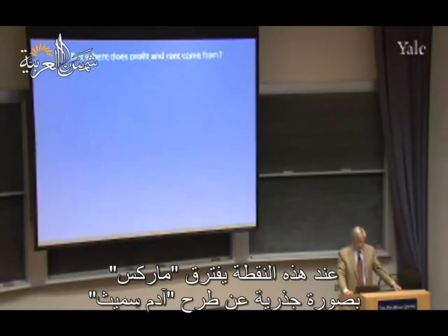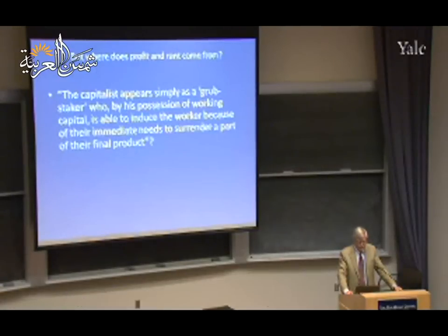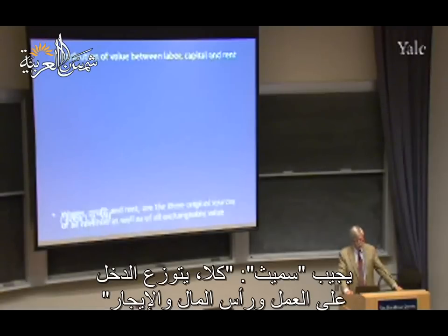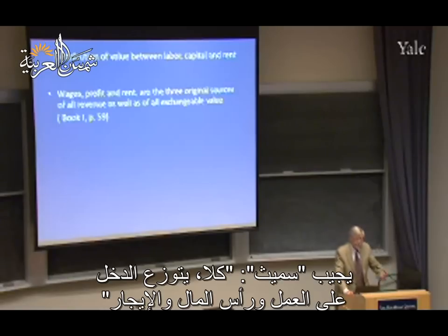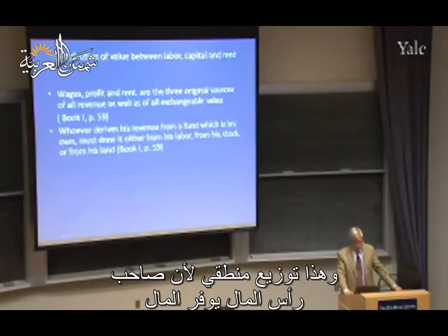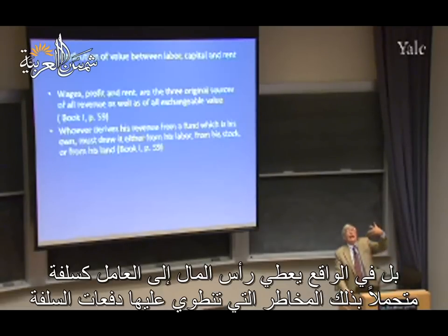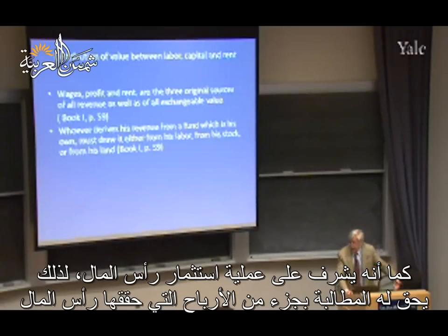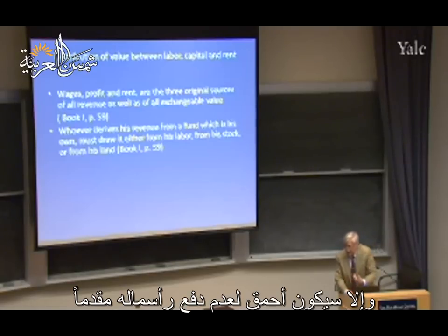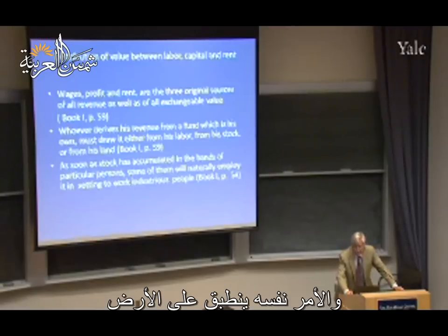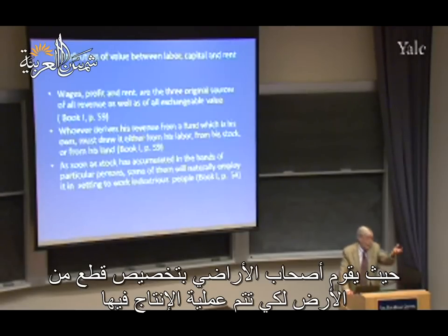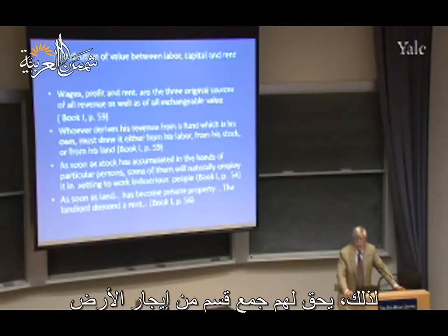This is where Marx will depart dramatically from Smith. Where does profit and rent come from? Smith says capital is not simply exploiting workers - there is a distribution of value between labor, capital, and rent. This is reasonable because the capitalist advances capital to the laborer, takes risks, and supervises the labor process, and therefore should claim some profit. Similarly, landowners provide the land on which production takes place and therefore collect rent.